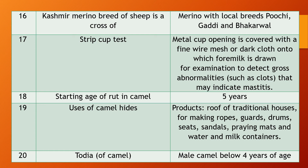Question 19. What are the uses of camel hides? Each and everything of the camel is used, but here we will see the uses of hide. The hide is useful for many products. In olden days, the hide was used to make the roof of traditional houses, for making ropes, guards, drums, seats, sandals, praying mats, and water and milk containers. These are the various uses of camel hides.